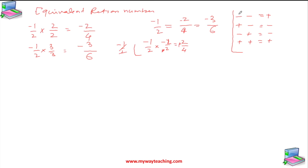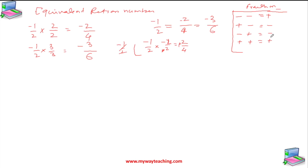You have already gone through fractions. These details are explained again just for understanding. So when you multiply minus × minus it gives positive; positive × minus gives minus; minus × positive gives minus; positive × positive gives positive.